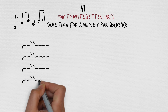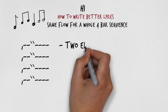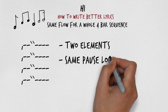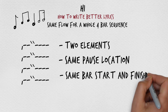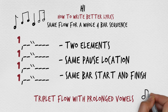To first map out the scat, before listening to it, check out the following. We'll combine only two elements: keep the same pause location and bar start and finish. We'll use a variation of a triplet flow, but on every tail we'll prolong two vowels so we can make it into a simple melody. We'll start the flow right after beat 1, bang it out and just repeat it. We'll end up with something like this.